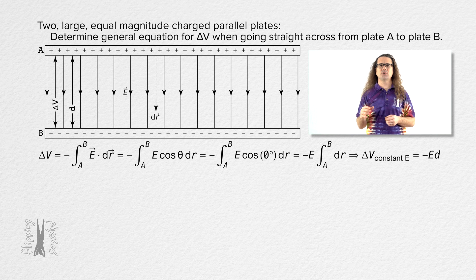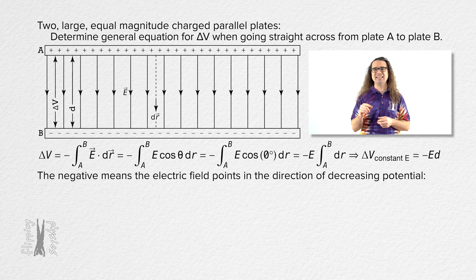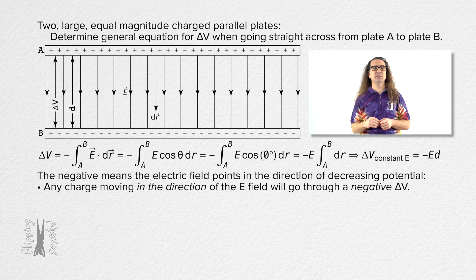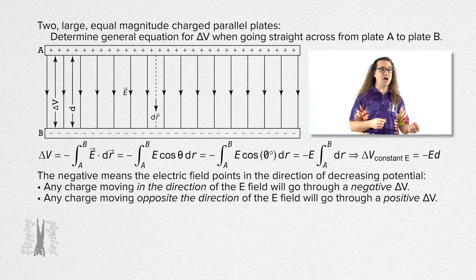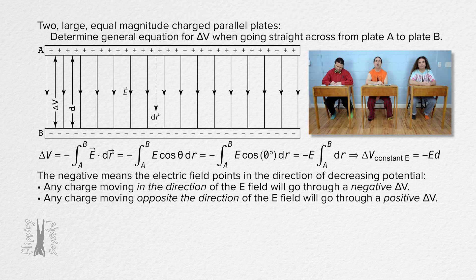This is a good time to discuss the negative in the electric potential equation. The negative means the electric field points in the direction of decreasing potential. In other words, a charge moving in the direction of the electric field will go through a negative potential difference and a charge moving opposite the direction of the electric field will go through a positive electric potential difference.